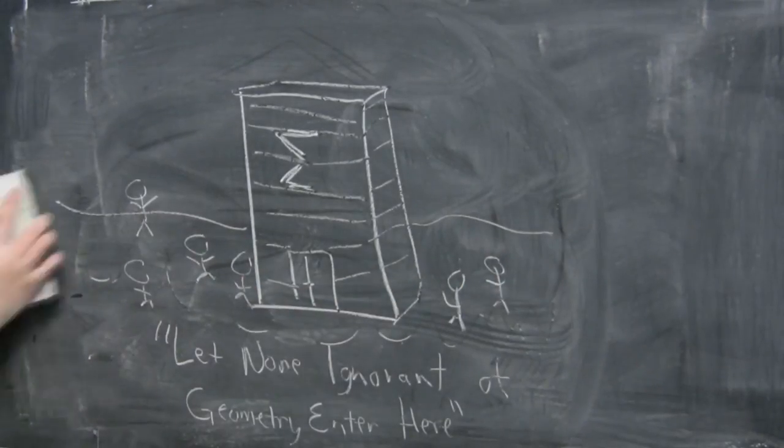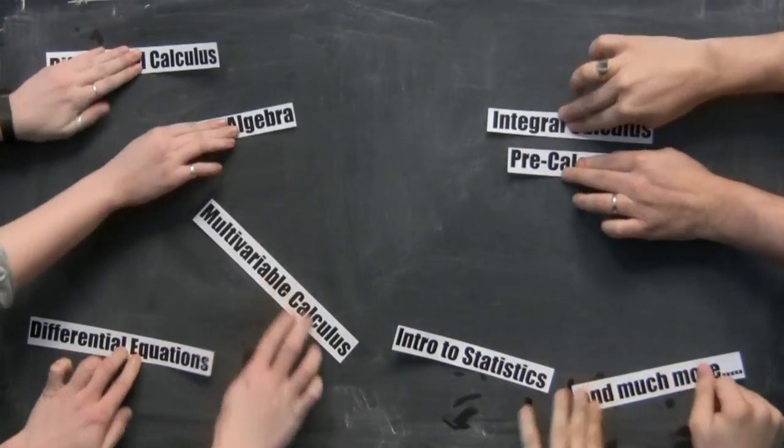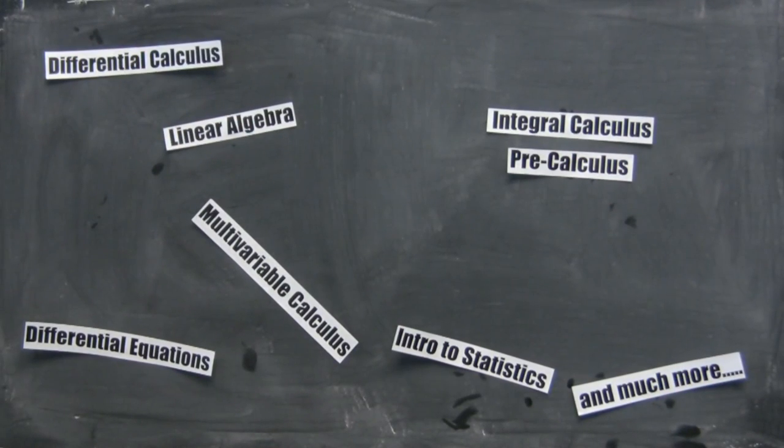We started with our Worldwide Calculus series, and now the center publishes math textbooks covering a wide range of subjects. These books are high-quality and completely affordable, starting at under $10 per book.